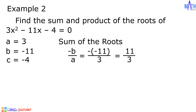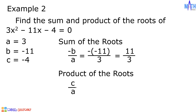The sum of the roots is equal to 11 over 3. Next is the product of the roots: c over a is equal to negative 4 over 3. Since negative 4 over 3 is already expressed in lowest term, the product of the roots is negative 4 over 3.